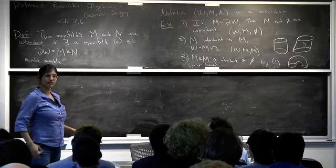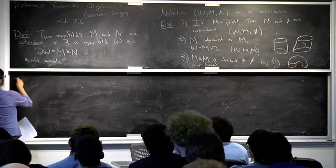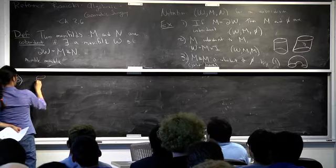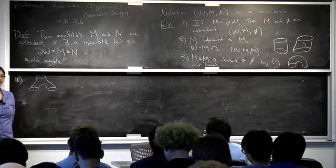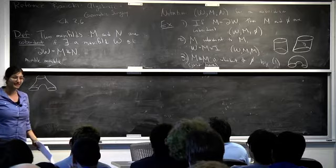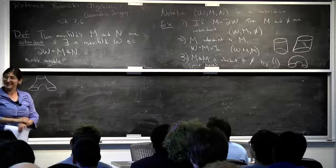Here's a specific cobordism — a pair of pants. It shows that one circle is cobordant to two circles. In fact, if you want to dress an alien with M minus one arms, a head, and N legs in a onesie, you see that M circles are cobordant to N circles.